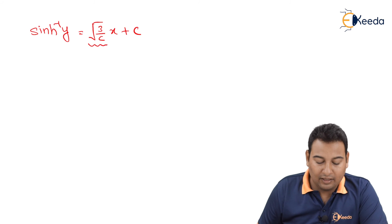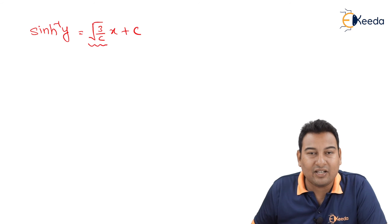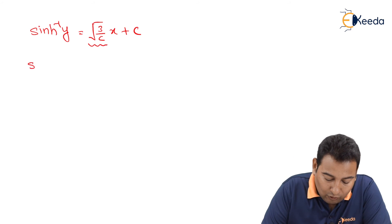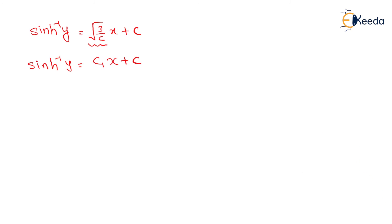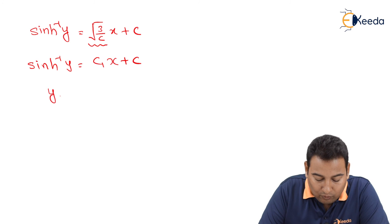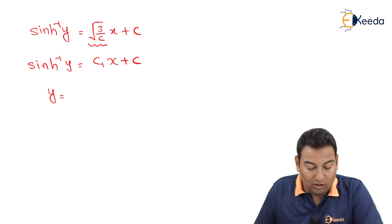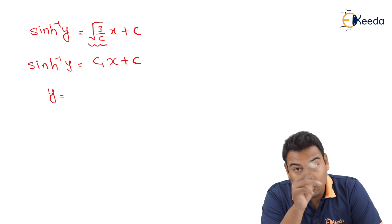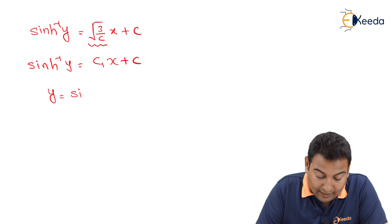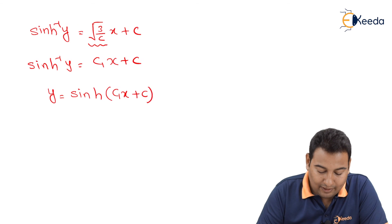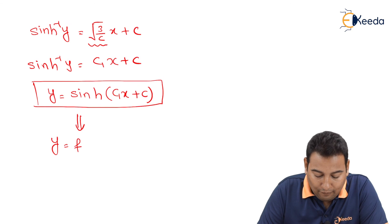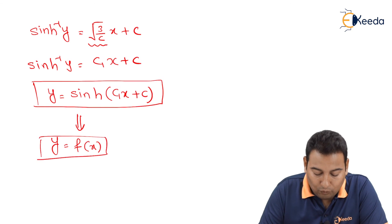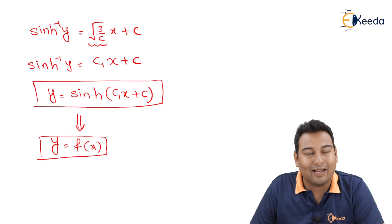Since √(3/c) is a constant, we can replace it with c₁. Therefore sinh⁻¹(y) = c₁x + c, which gives y = sinh(c₁x + c). This is the required solution — we have y as a function of x. Hope this is clear. You're done with the problem. Thank you.